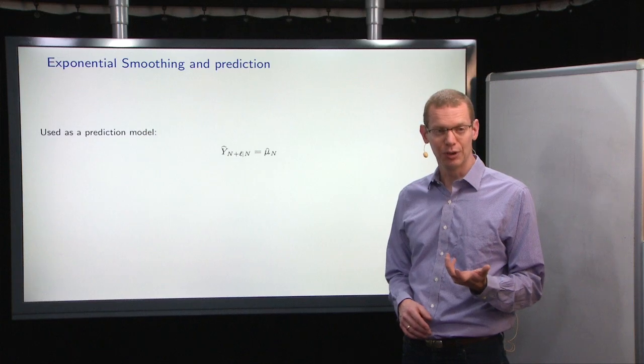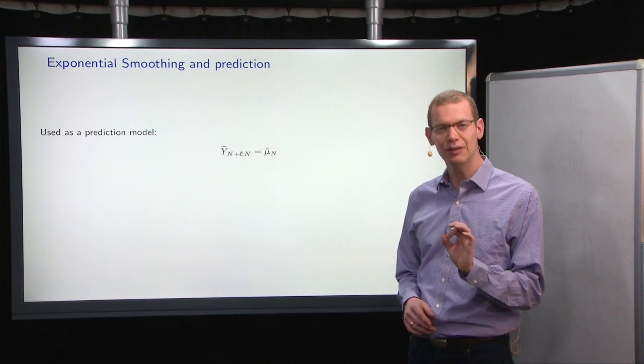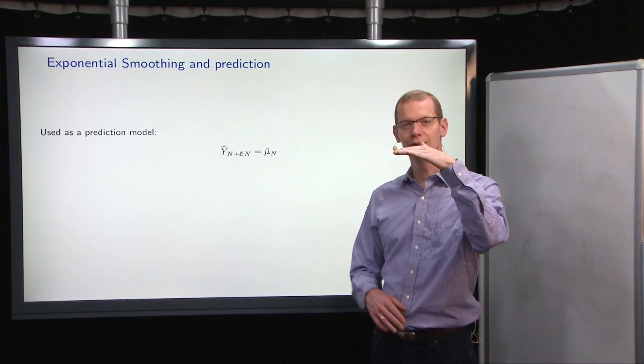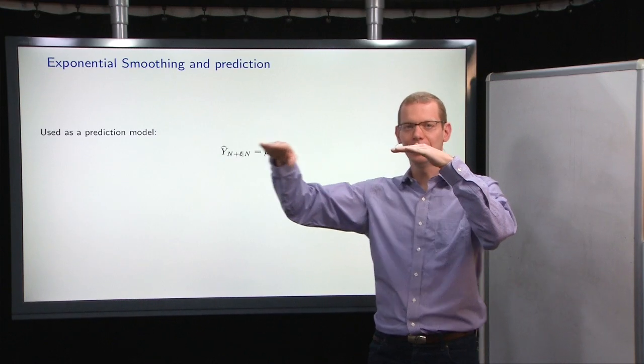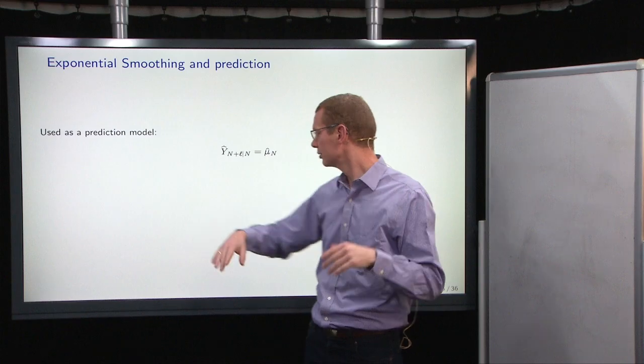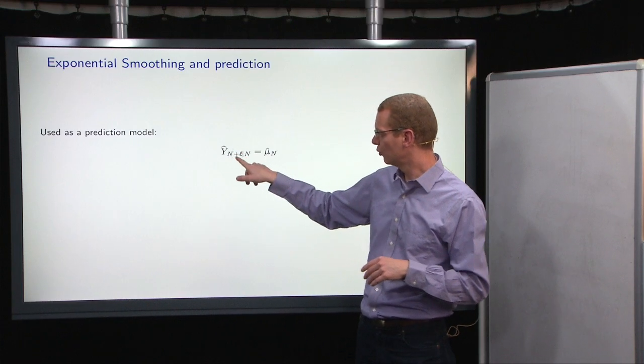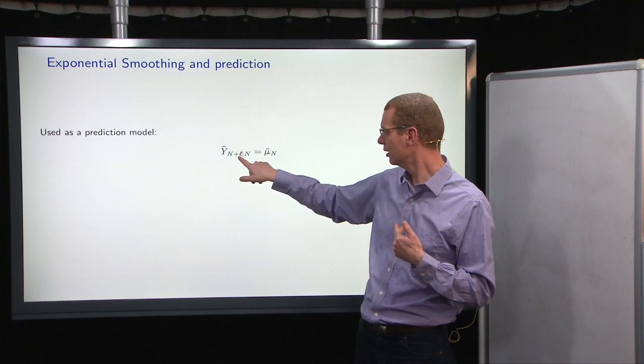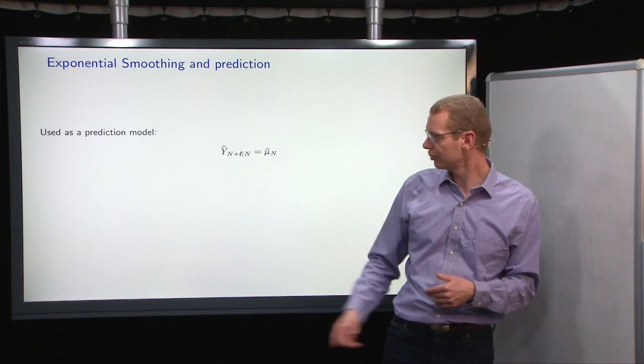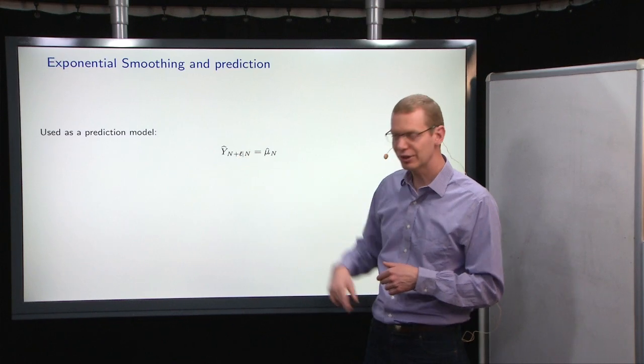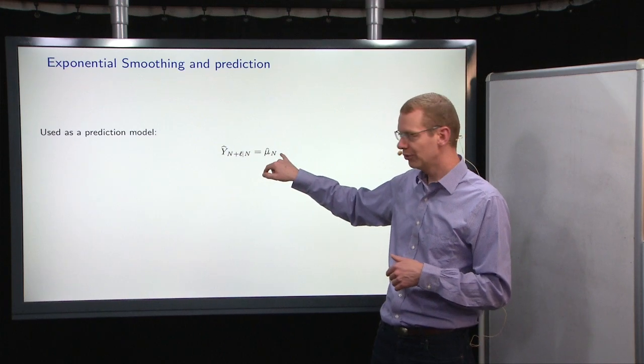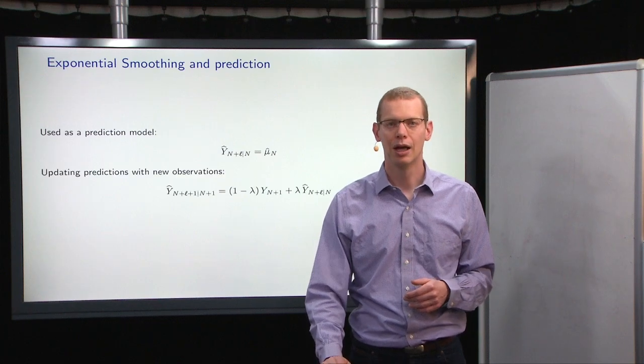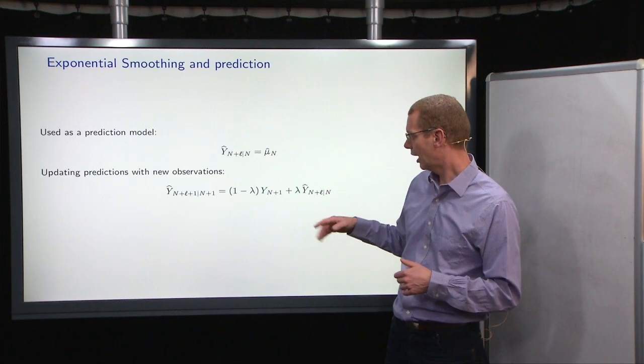So if we want to predict with this model, since what we estimate is a mean value, what do we actually do to predict? Well, if you estimate a mean value, your prediction will be that particular value. So that means no matter to what horizon you predict, n plus l, you will always just use the conditional information of the time n, then you just use the estimate at time n.